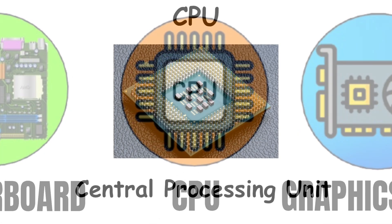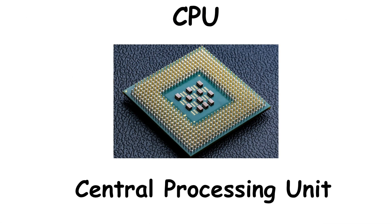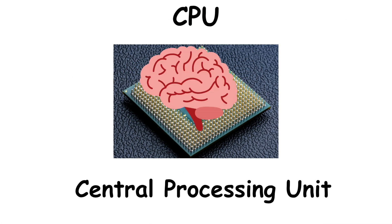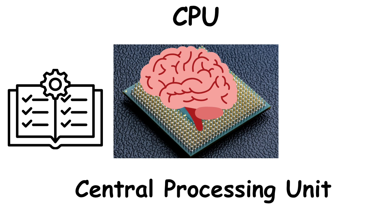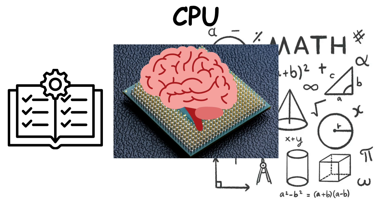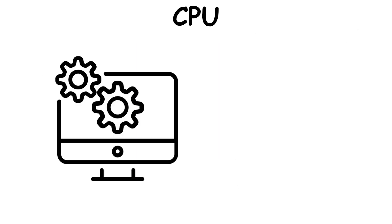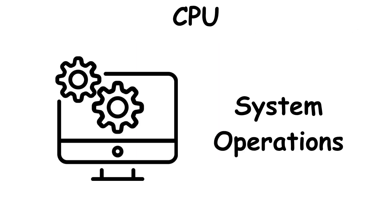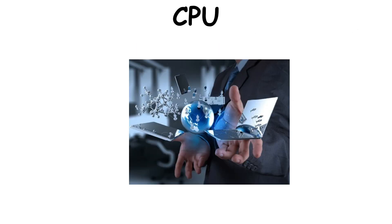CPU. The central processing unit is the brain of a computer, responsible for executing instructions and performing calculations that drive software applications and system operations. As technology advances,